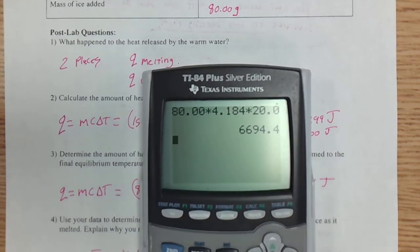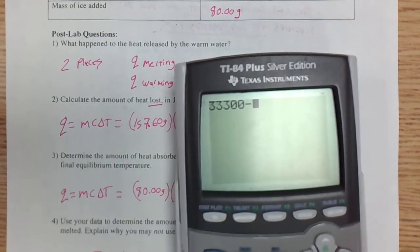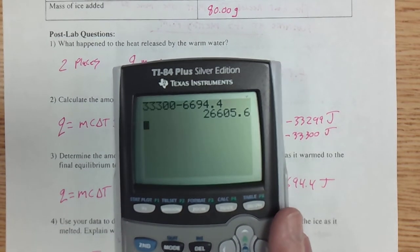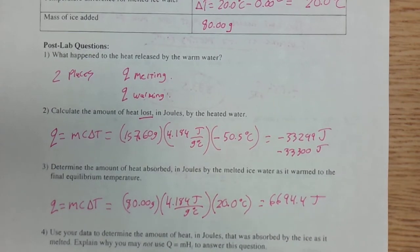And then I can take this out. 33,300 minus 6,694.4. And then the amount of heat that was necessary to melt the ice cube was 26,606 joules.